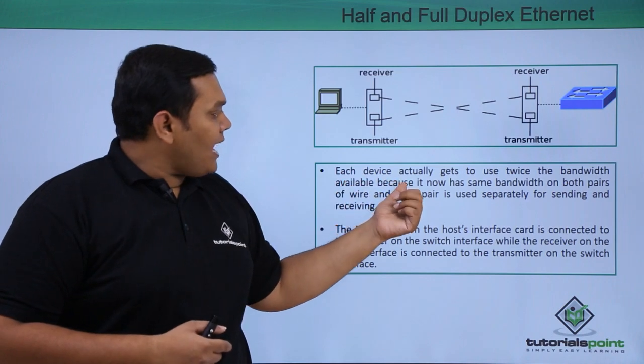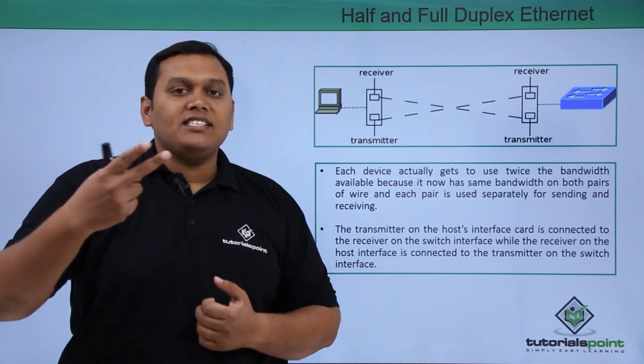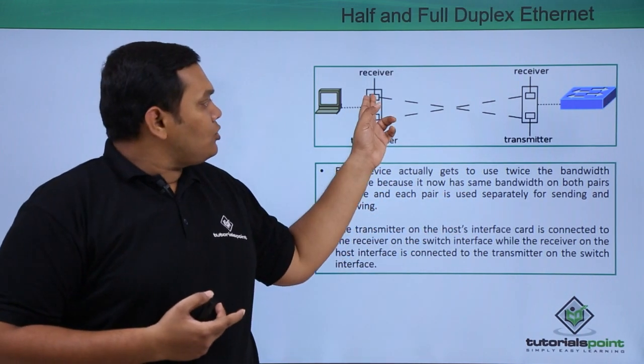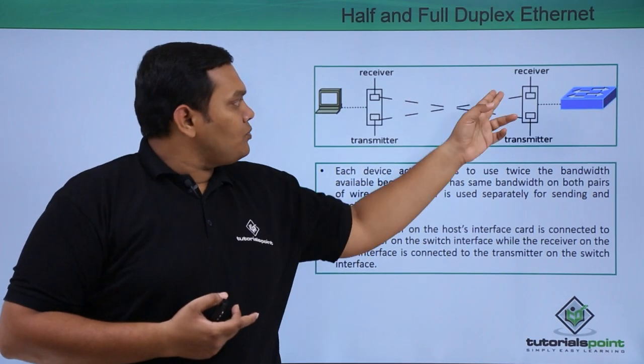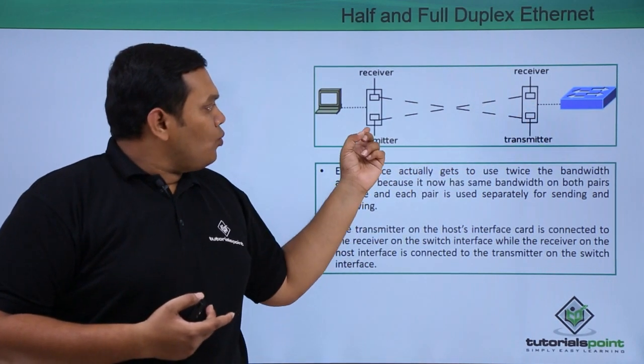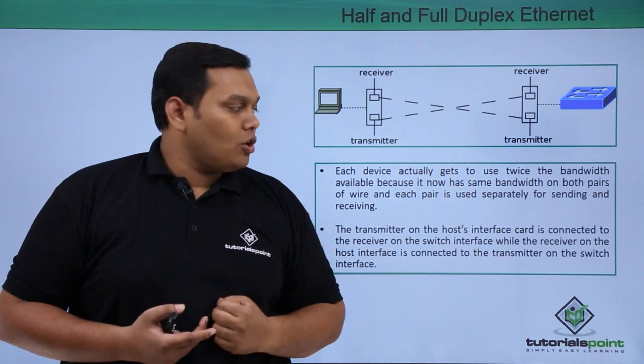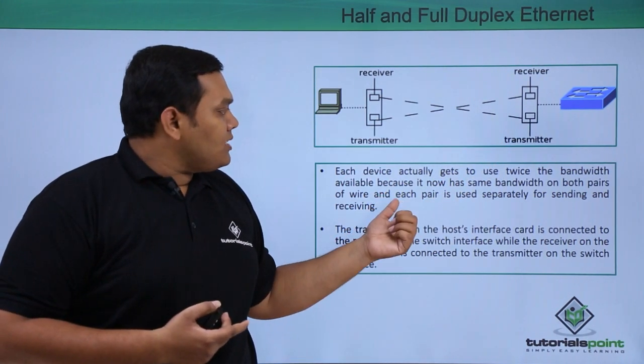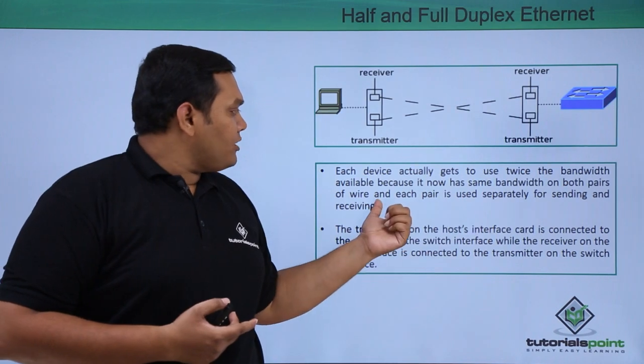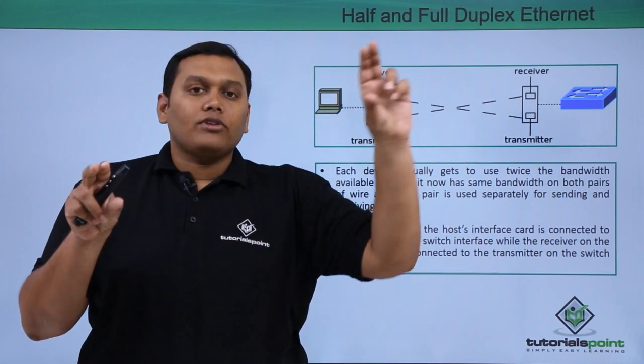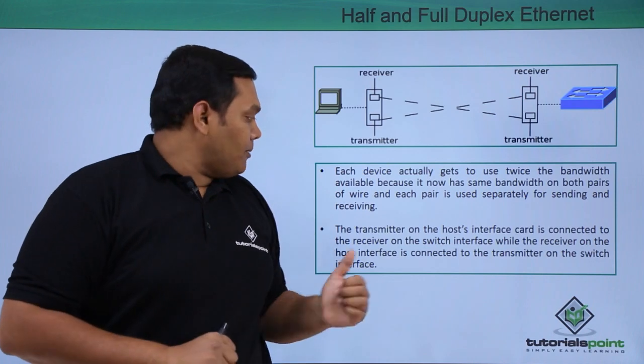Each device actually gets to use twice the bandwidth because two wires are connected vice versa to the switch, so one bandwidth and the second bandwidth—twice the bandwidth is utilized. You can also see the same bandwidth on both pairs of wires; each pair is used separately to transmit data and to receive data.